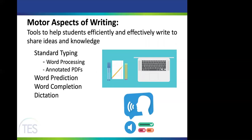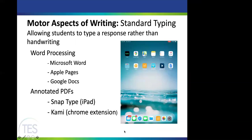The next area is the motor aspects of writing — tools that help a student efficiently and effectively write to share their ideas and knowledge. We'll look at standard typing using a word processor or annotated PDF, word prediction, word completion, and dictation. Standard typing is simply allowing students to type rather than handwrite. Many students never quite develop legible or efficient handwriting, so we can start by giving them access to a computer to type in Microsoft Word, Apple Pages, or Google Docs.